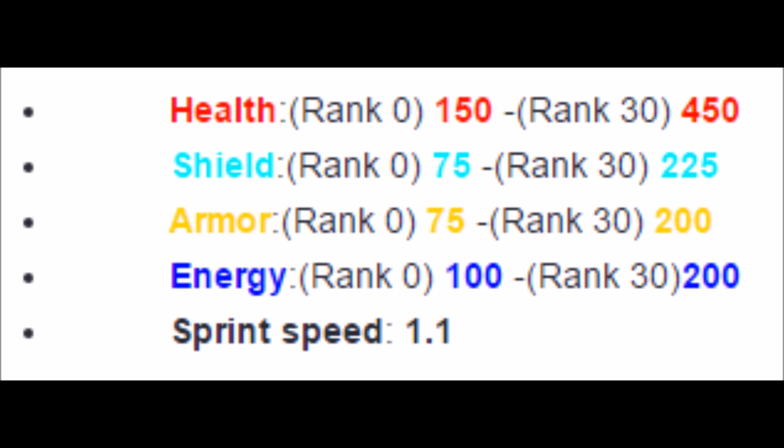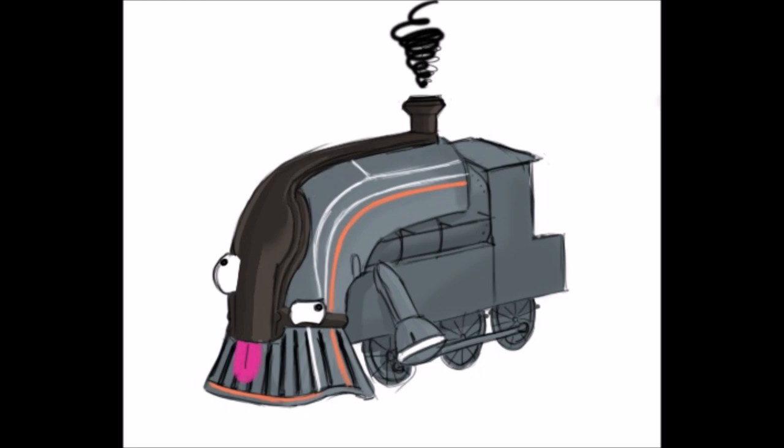Vigil has high health, low shields, above average armor, slightly below average energy capacity, and above average sprint speed.